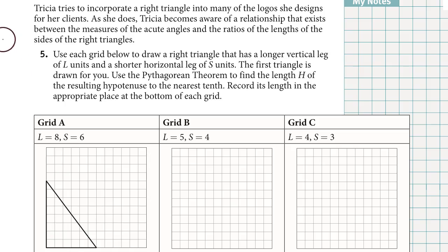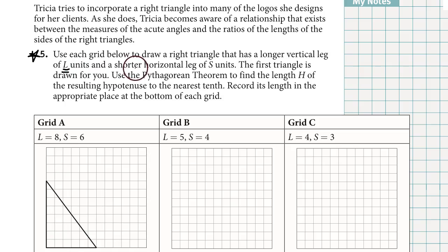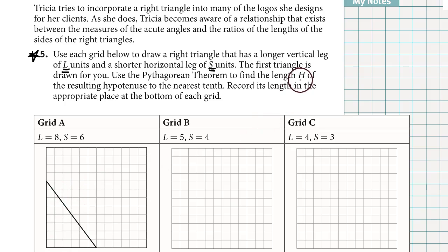Let's skip to question 5 and follow the directions to draw some different right triangles on some grids. It says use each grid below to draw a right triangle that has a longer vertical leg called L and a shorter horizontal leg called S. The first triangle is drawn for us. Then use the Pythagorean theorem to find the length of the hypotenuse, which is the letter H, and record that length at the bottom of the grid.